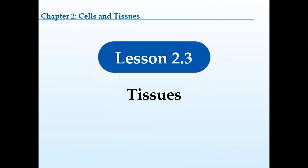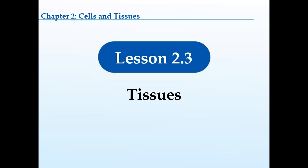Remember, we talked about the levels of organization: cells make tissues, tissues make organs, and so on. Same type of cells come together to make a tissue, and different types of tissue come together to make organs. There are four basic types of tissue. Everything in your body falls into one of these. Epithelial tissue lines and covers — think skin, the lining of your digestive tract, the pleura around your lungs.